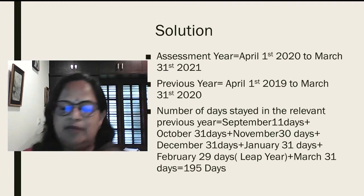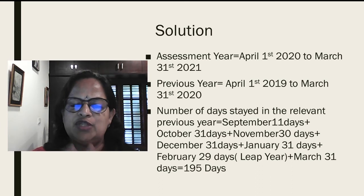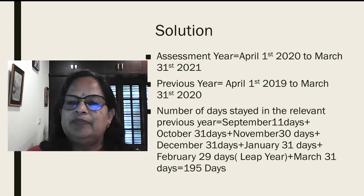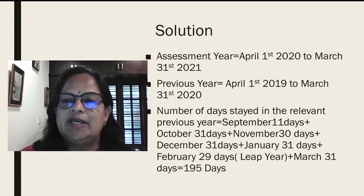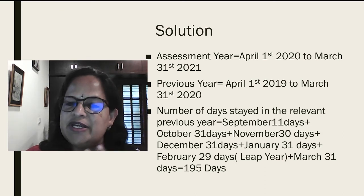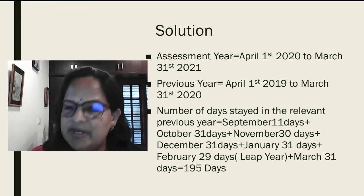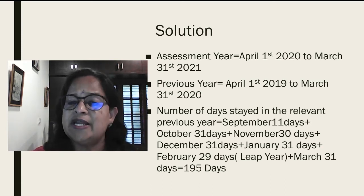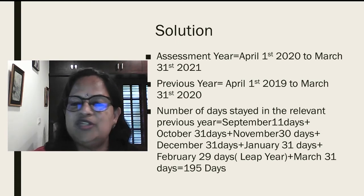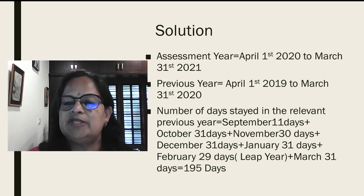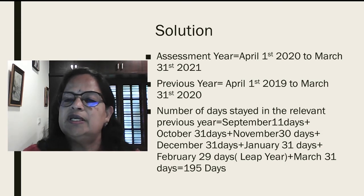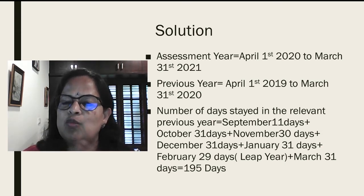For September, counting from the 20th to the 30th gives 11 days. October is a full month: 31 days. November: 30 days. December: 31 days. January: 31 days. February: 29 days — this is important because 2020 is a leap year. March: 31 days. Total: 11 + 31 + 30 + 31 + 31 + 29 + 31 = 195 days.